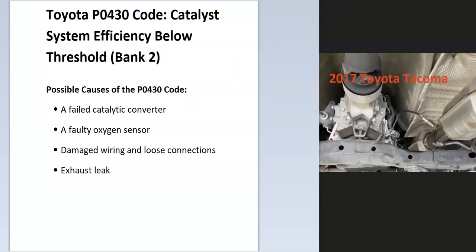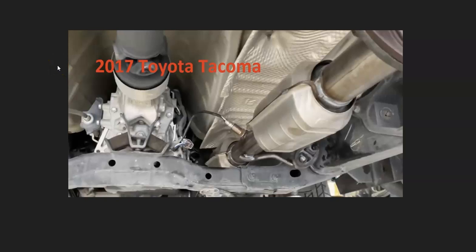When you get this code, the first thing you want to do is locate bank 2 and follow that side of the exhaust, because that's going to be the side having the issue. You're going to want to examine the O2 sensors, since this is what sends information back to the onboard computer about the catalytic converter. If one of these has an issue, it might be reporting back bad data, and there might not actually be a problem with the catalytic converter.